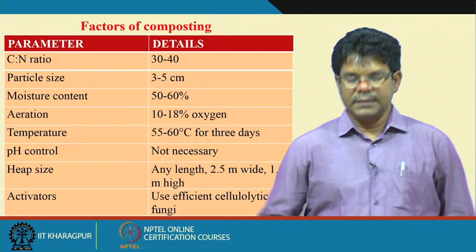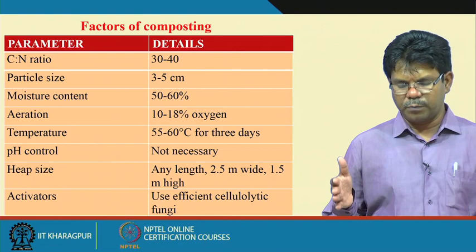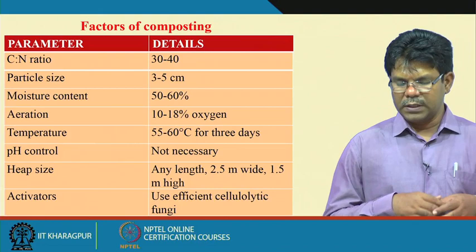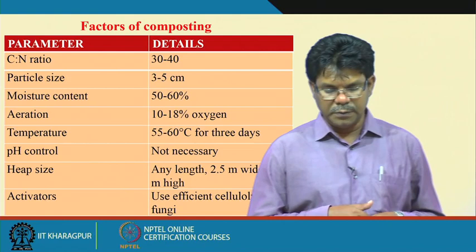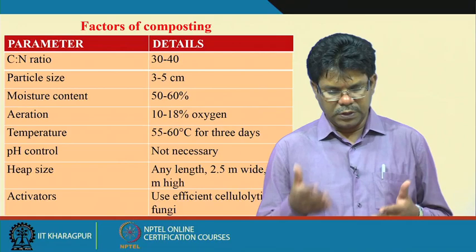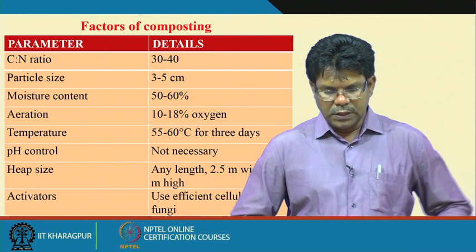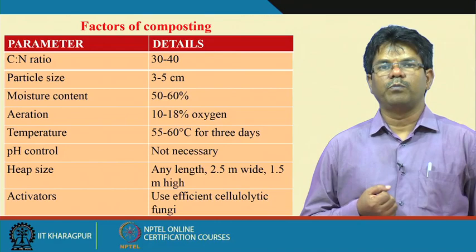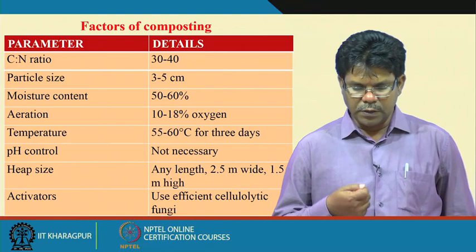Heap size: length can be any length as it is not an issue. Width should be 2.5 meters and height should not be more than 1.5 meters. The 2.5-meter width is maintained for proper uniformity and judgment of compost quality. If height is increased beyond 1.5 meters — even increasing to more than 1 meter can be an issue — it becomes anaerobic decomposition, as aerobic organisms may not survive. So heap size should be kept at less than 1.5 meters in height. Activators such as efficient cellulolytic fungi can be used to accelerate the composting process or to enrich the compost with specific nutrients.